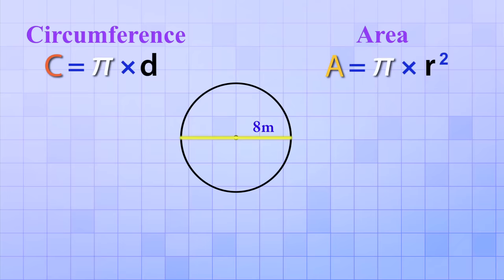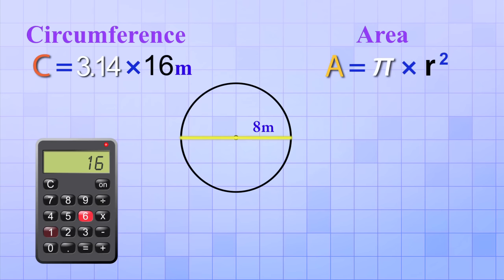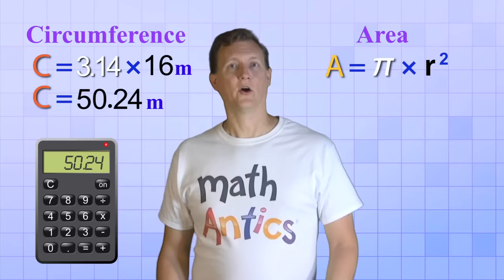Circumference equals Pi times diameter. To get the diameter, we take the radius and we double it. That is, we multiply it by 2. 2 times 8 equals 16, so the diameter is 16 meters. Then we multiply that by Pi to get the circumference. Since this is decimal multiplication, I'm going to use a calculator. 16 times 3.14 equals 50.24. So that means that the circumference of this circle is 50.24 meters.